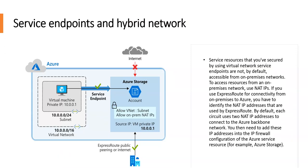Service endpoints and hybrid networks: service resources secured by using virtual network service endpoints are not, by default, accessible from an on-premises network. So if you have disabled internet access and enabled service endpoints for some Azure services, those will not be accessible from your on-premises data centers.